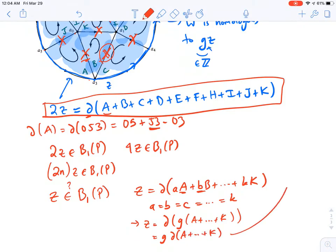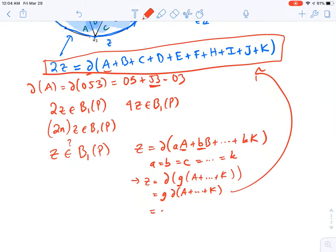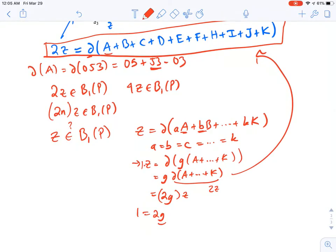Okay, but we just showed right up above that when you apply del to the sum of all the regions, you end up getting 2Z. So, this ends up being 2G times Z, right, because this is equal to 2Z. Okay, so that means that 1Z, that's up here, has to equal 2G. So, 1 has to equal 2G, but G is an integer. And, this is no bueno, right? This would tell you G is 1 half. And, that's definitely not an integer.